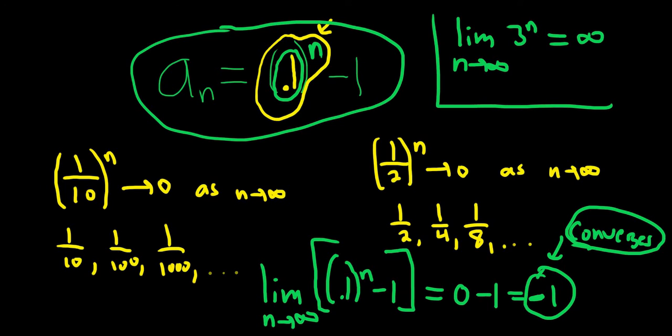So yeah, the main thing you should take away from this problem is that whenever you have a number between 0 and 1 and it's being raised to the nth power, that limit will always be 0. That's it.